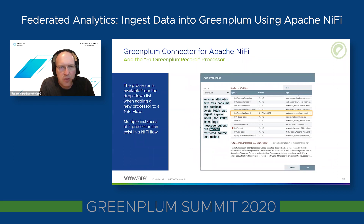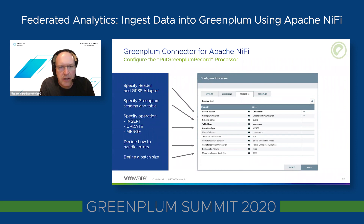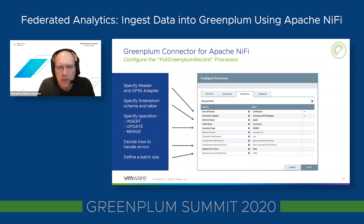The next step is to create the actual processor. Using the NiFi user interface, we choose the PutGreenplumRecord processor from the drop-down list. Typically we need multiple instances of the processor for a specific flow — one instance per table we want to ingest data to. When configuring the Greenplum processor, we provide information about the record reader configured previously, the Greenplum GPSS adapter, and the schema name and table name for the target Greenplum table. We also specify the operation — we support insert, update, and merge.